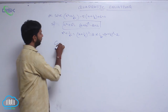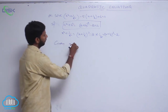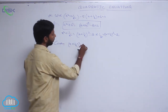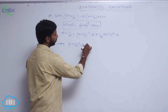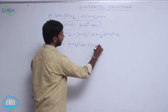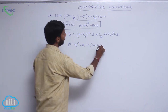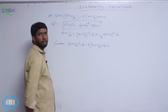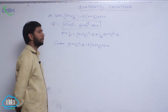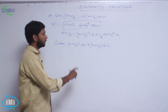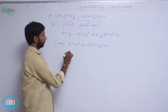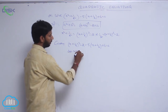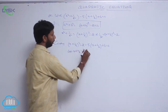So the given equation becomes: x plus 1 by x whole square minus 2 minus 5 of x plus 1 by x plus 4 equal to 0. Let x plus 1 by x equal to small a.